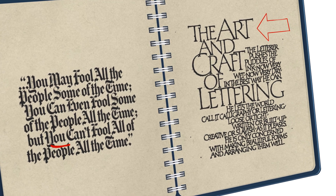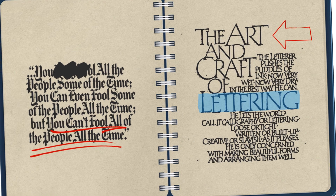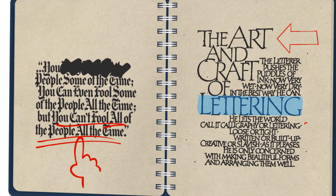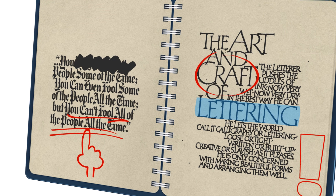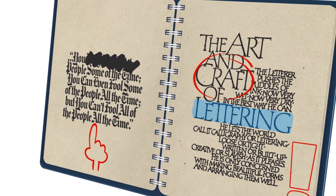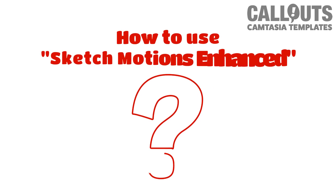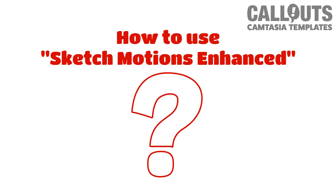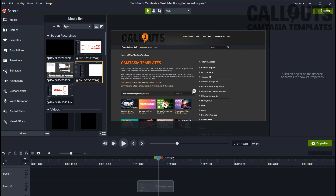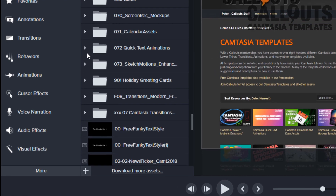So before I show you how to use these templates, I just wanted to highlight a few of them. Once installed, you will find a new folder in your library called 073 Sketch Motions Enhanced.